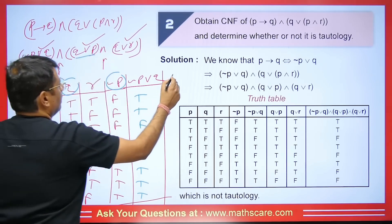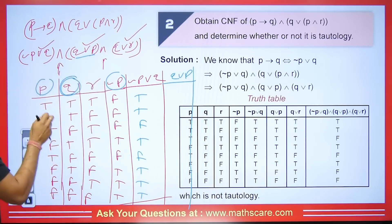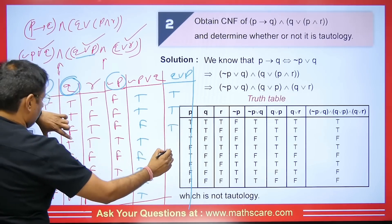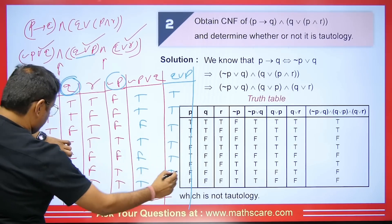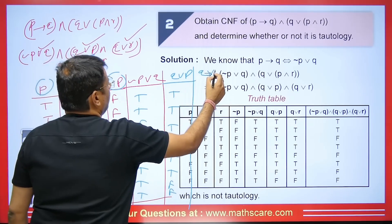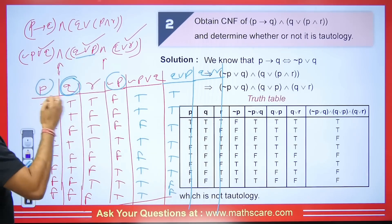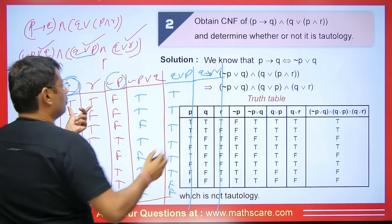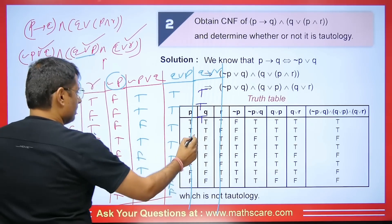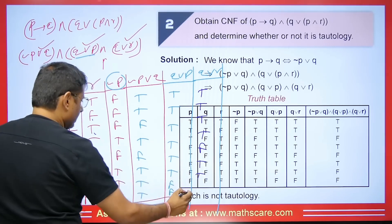We calculate Q OR R: Q and R columns give T OR T = T, T OR F = T, F OR T = T, T OR T = T, F OR F = F, T OR F = T, F OR T = T, F OR F = F. Now we take the AND product of the three computed columns. Whenever there is any False in the AND product, the result is False.